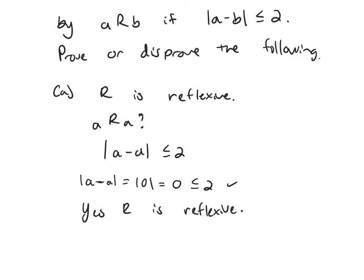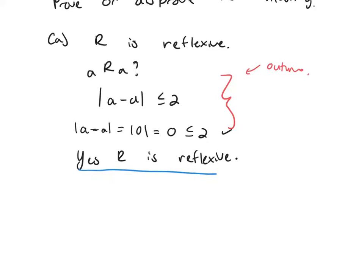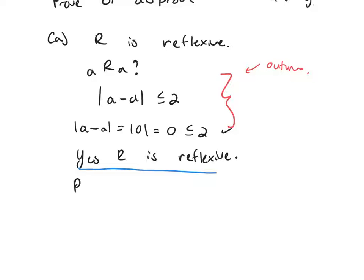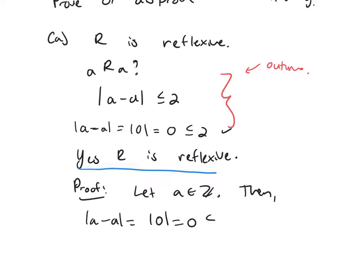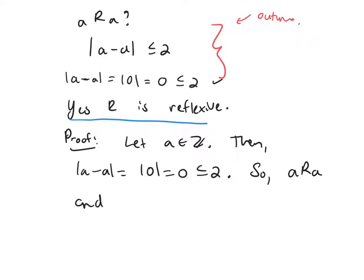We've already written the outline of the proof. Let's write it formally. Proof: take an arbitrary integer A. Then the absolute value of A minus A equals 0, and that's less than or equal to 2. So A is related to A, and R is reflexive.